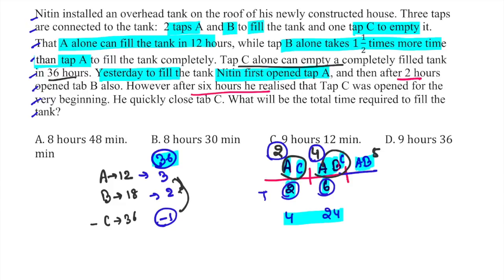Total work done right now is 28 and we have to do 36 work, so 8 work is remaining. We have efficiency 5, work left is 8, so time is 8 by 5 which is 1 and 3 by 5.